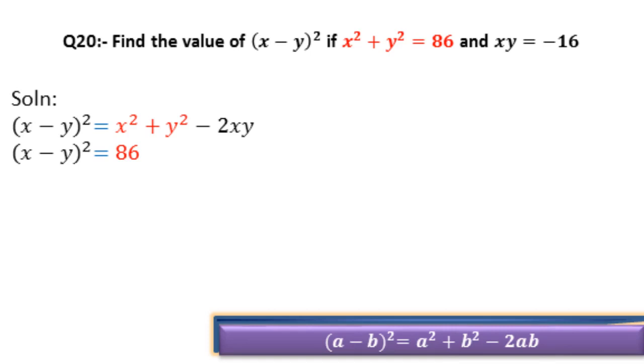Now look at the question above. x² + y² is 86, so we replace that with 86. And xy is -16, so we replace xy with -16. Therefore (x - y)² = 86 - 2(-16).